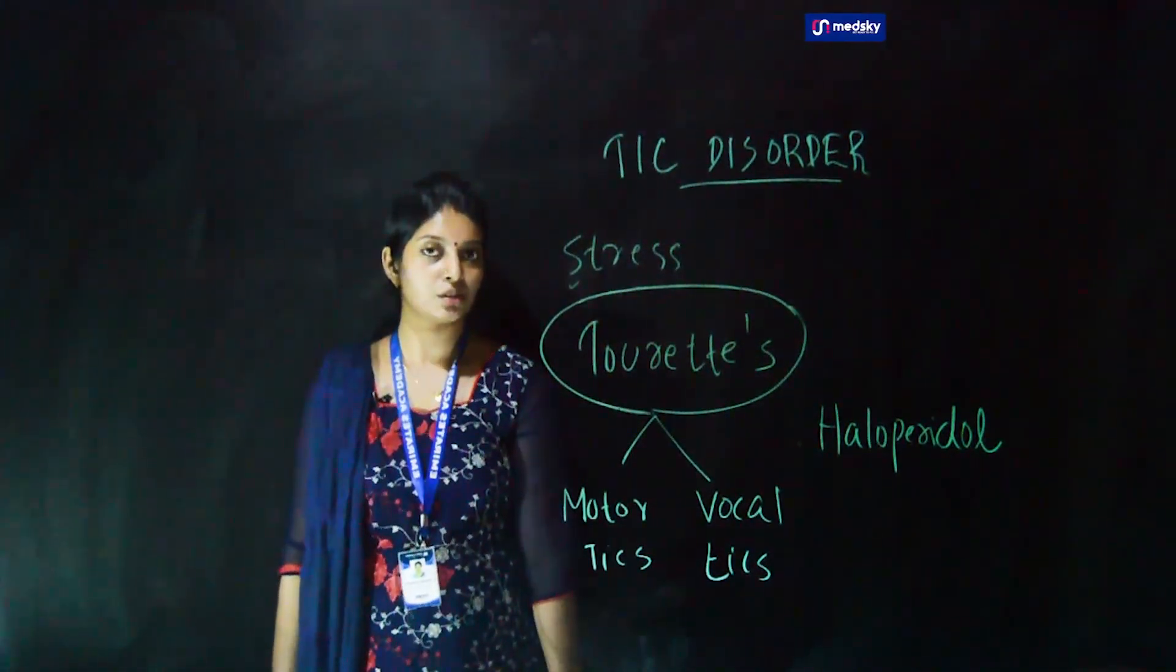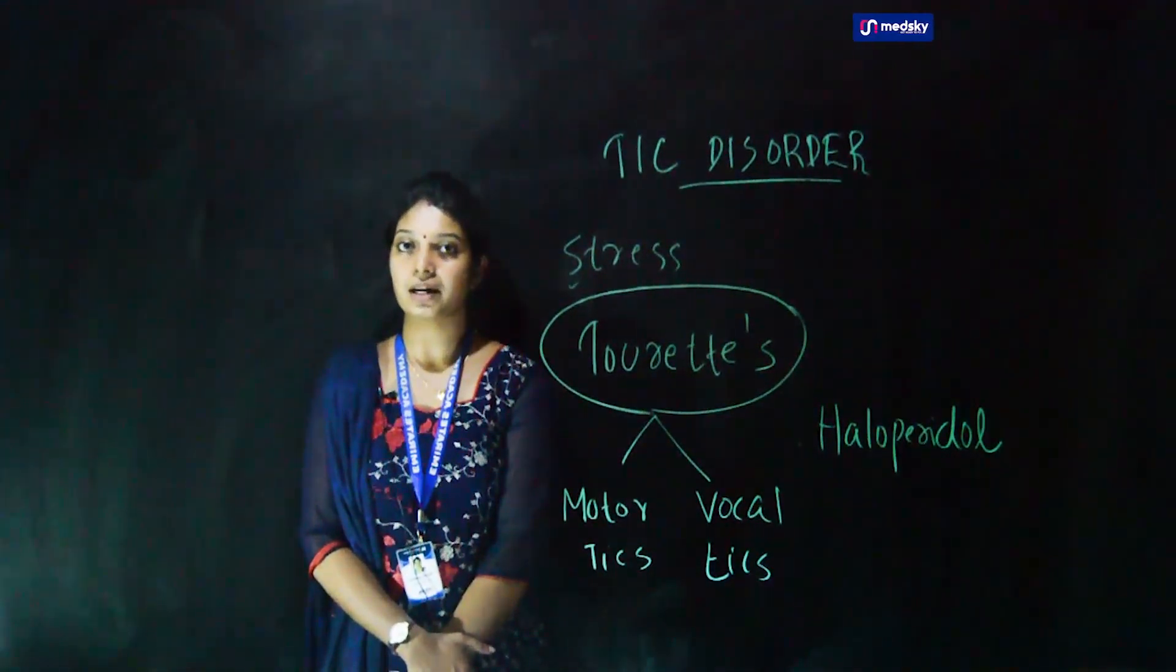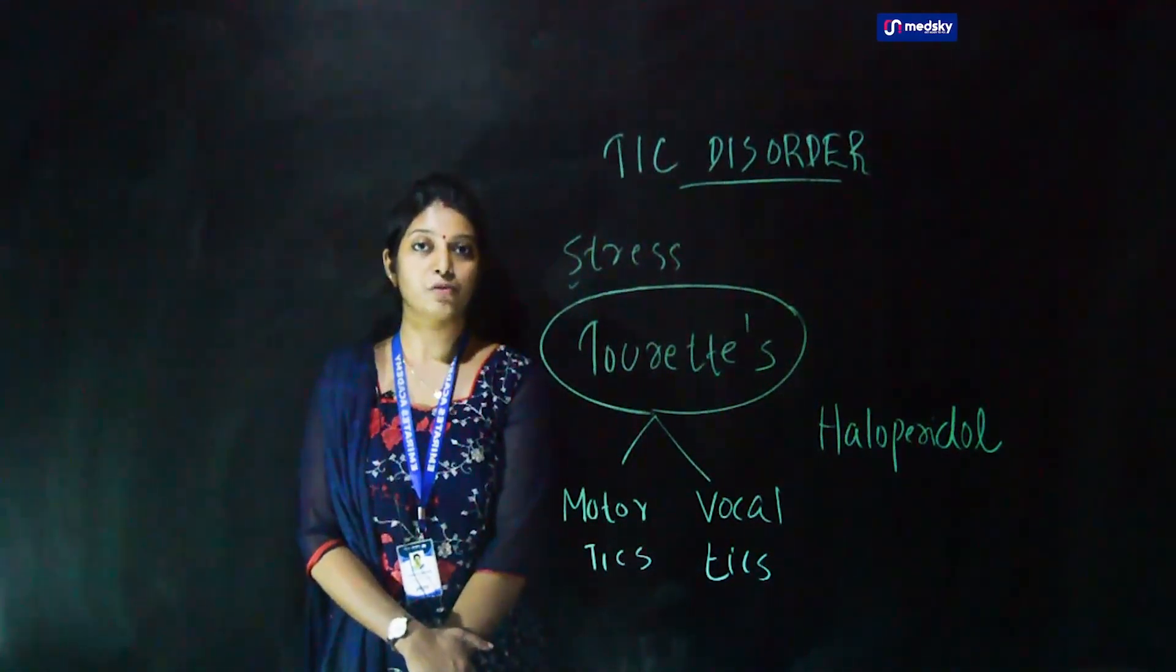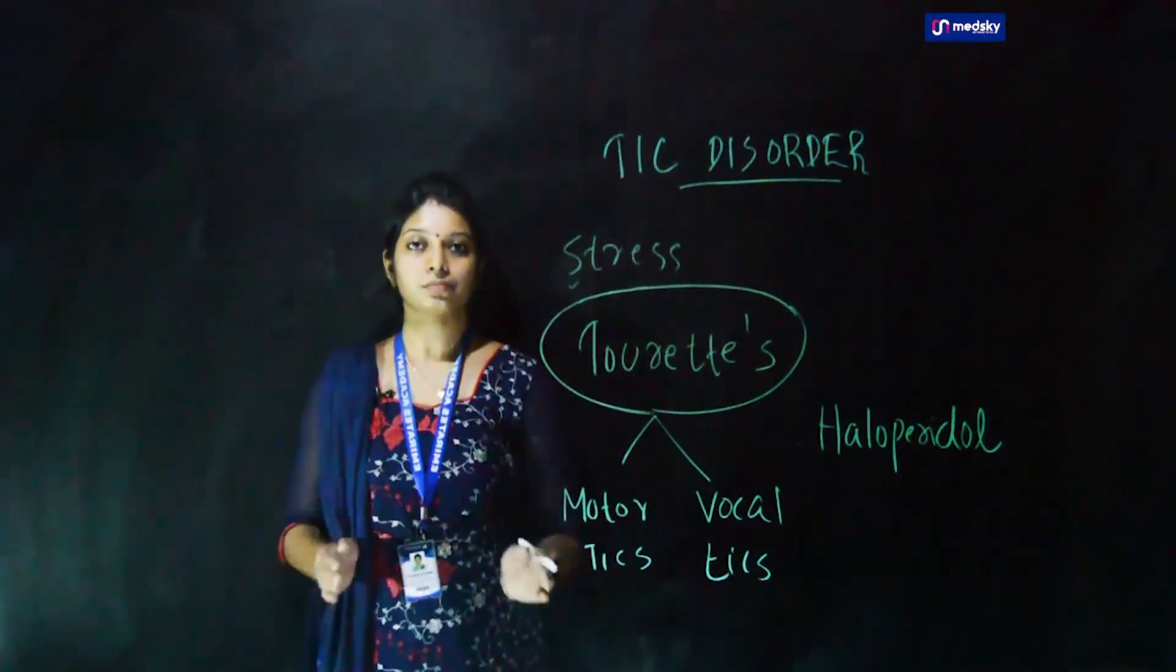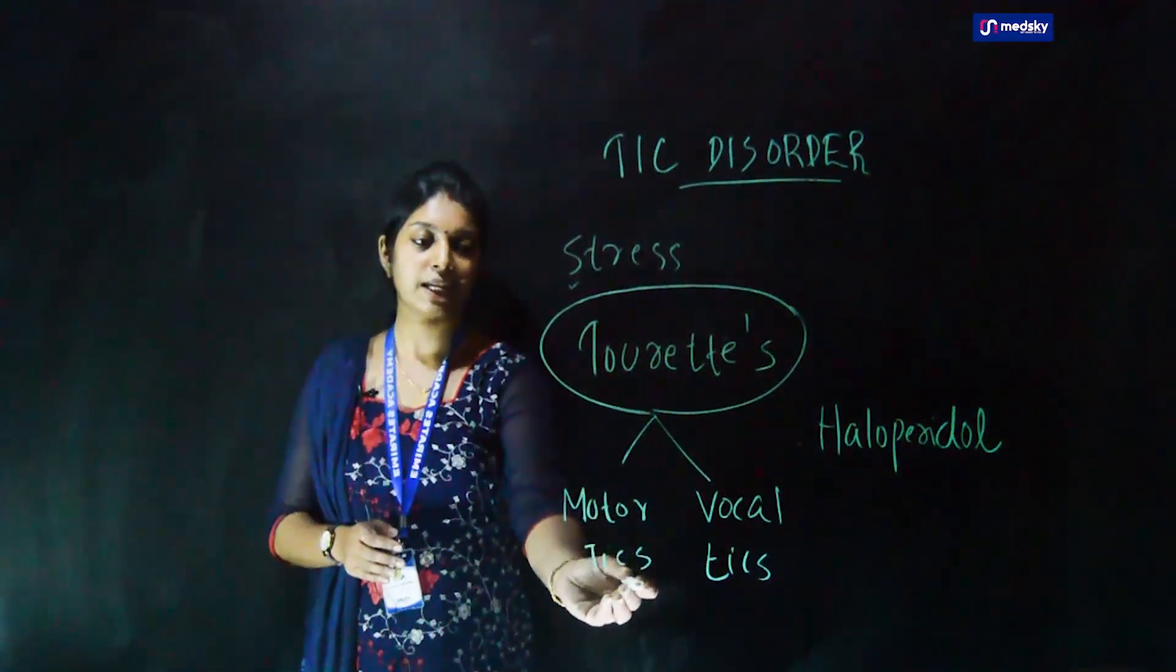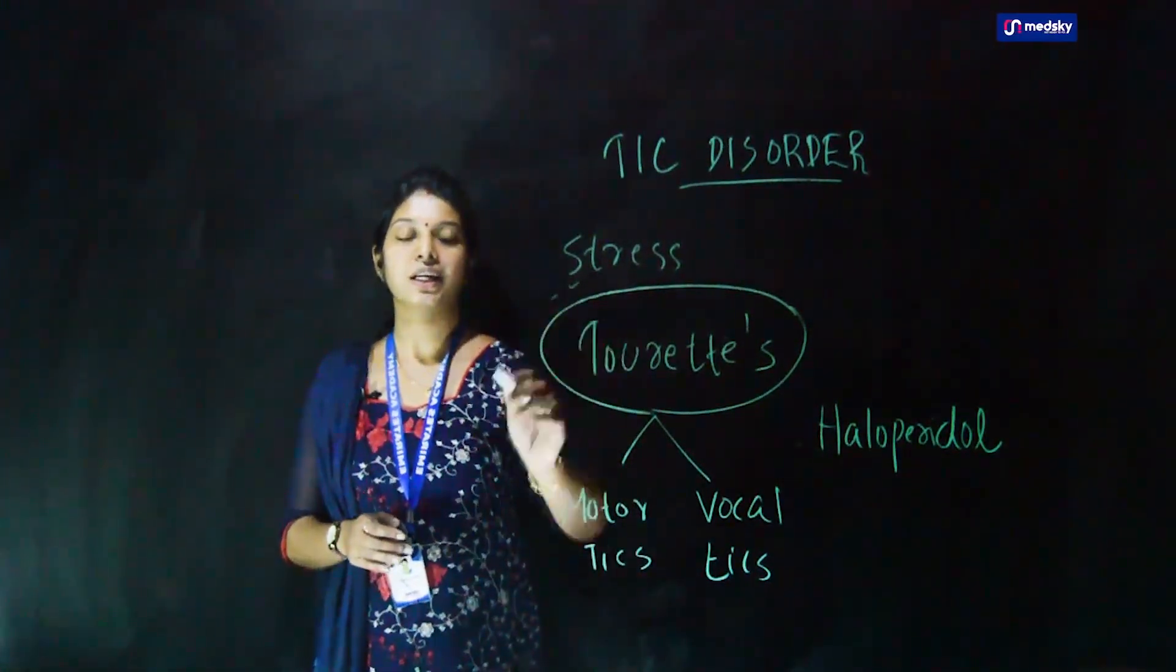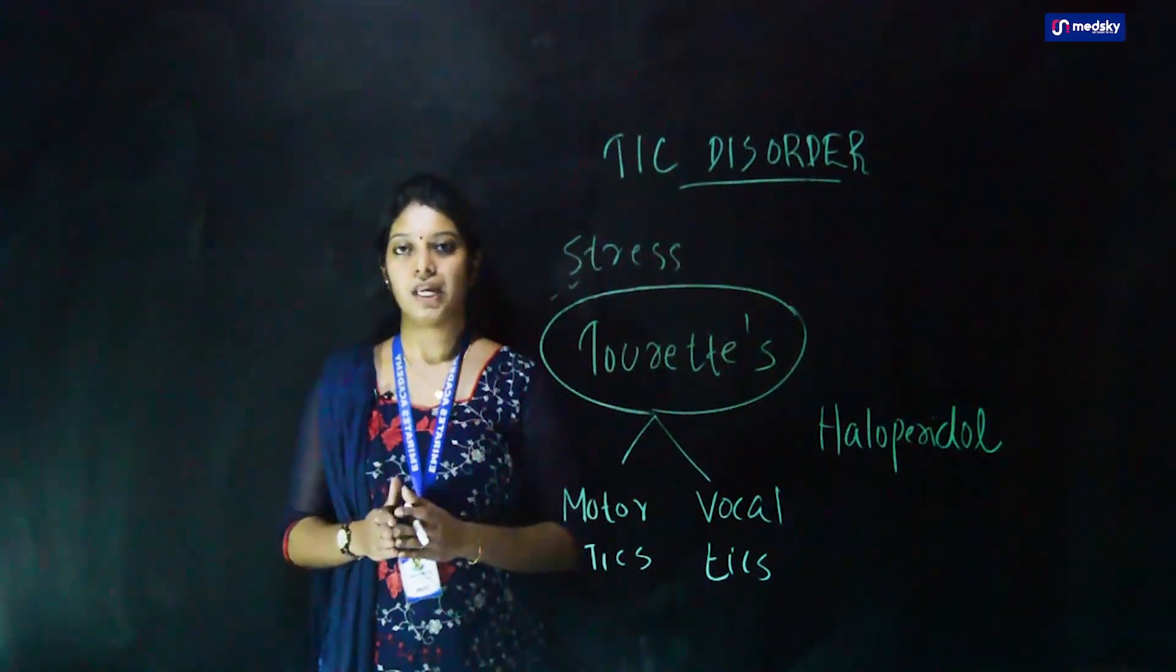So that's all regarding tic disorder. What do you mean by tic disorder? It is irregular, unwanted, uncontrollable, repetitive movements that can occur anywhere in the body. Tourette syndrome is the most severe form of tic disorder which has both motor tics and vocal tics. Stress is the leading factor here and the management includes haloperidol and behavioral therapy.